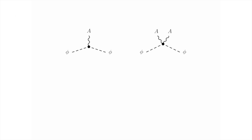Let's look at the interactions in this model in a little more detail. There are two kinds of interaction between the scalar field and the vector field. The first involves two scalar fields phi interacting with one vector field A. The second involves two scalar fields phi interacting with two vector fields A. The second of these interactions is more important for understanding why the vector field gets a mass when the scalar field breaks the symmetry. This second interaction is associated with a term in the potential energy with two powers of phi and two powers of A.